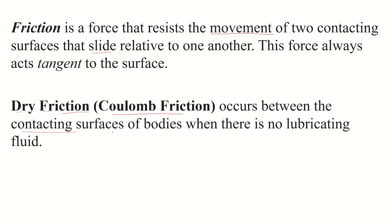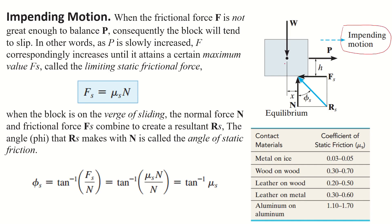In our daily life there are many bodies which do not involve lubricating fluids. Impending motion means that this block will start to move when the force P is greater than the frictional force, which opposes the motion of this block. A certain maximum value is called the limiting static frictional force; Fs stands for limiting static frictional force.